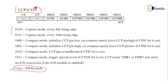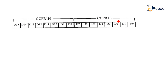We configure CCP1CON during the PWM lecture as well. The 8-bit lower and upper bytes along with the upper 2 bits from CCPRxH and CCPRxL form the full register set. So each CCP module has these three registers: CCPxCON, CCPRxH, and CCPRxL.